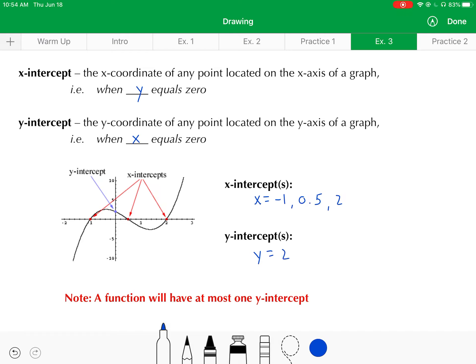And I want you to notice that for this to be a function, you can only have at most one y-intercept. If you have more than one y-intercept, you wouldn't be passing the vertical line test, and therefore you would not be a function.